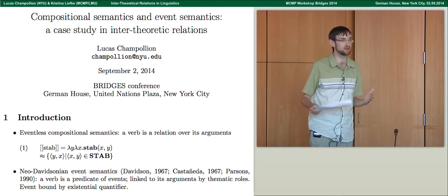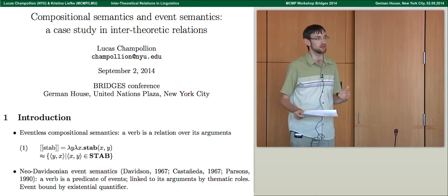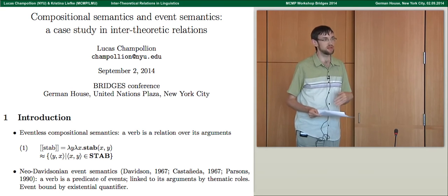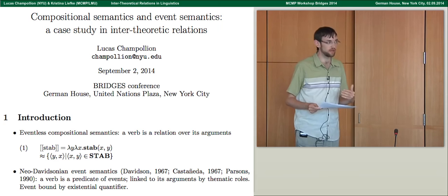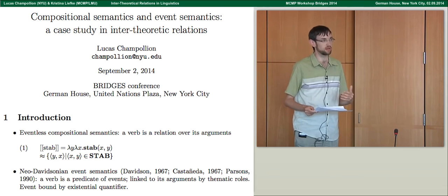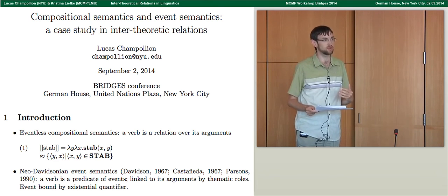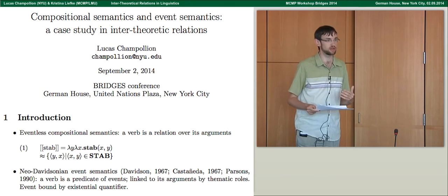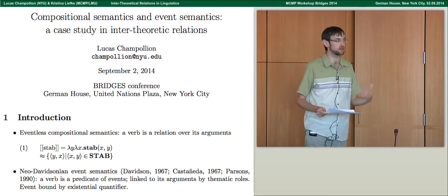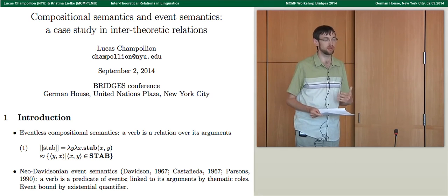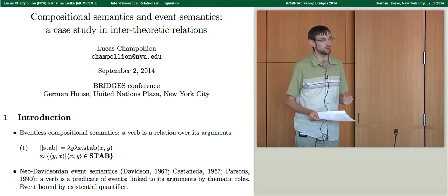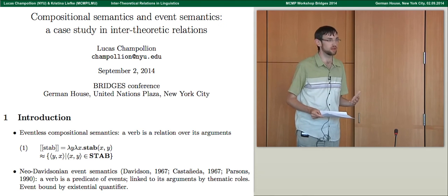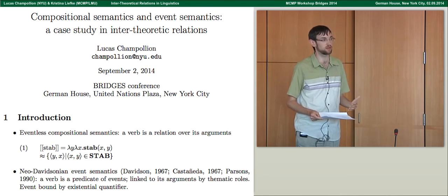Within compositional semantics, within Montague semantics, there are debates — for example, about whether the meaning of AND should be represented similarly to predicate logic, which amounts to intersecting two sets, or whether it should be represented as putting together two individuals to form a collective individual. This is just one of several examples of currently open debates within compositional semantics.